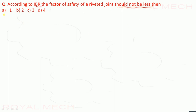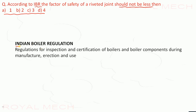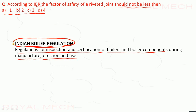According to IBR, the factor of safety of a riveted joint should not be less than 1, 2, 3, or 4. IBR is the Indian Boiler Regulation — regulations for inspection and certification of boilers and boiler components during manufacturing, erection, and use. According to IBR, the riveted joint should not have a factor of safety less than 4. So option D is the correct option.